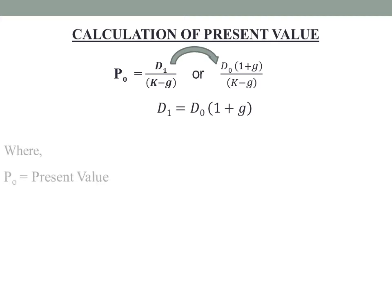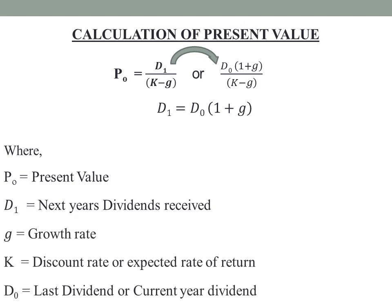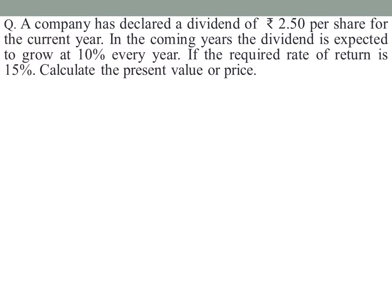Here, P0 is equal to the present value. In the coming years, the dividend is expected to grow at 10% every year. If the required rate of return is 15%, we calculate the present value or price. The current year dividend declared is Rs 2.50 per share.